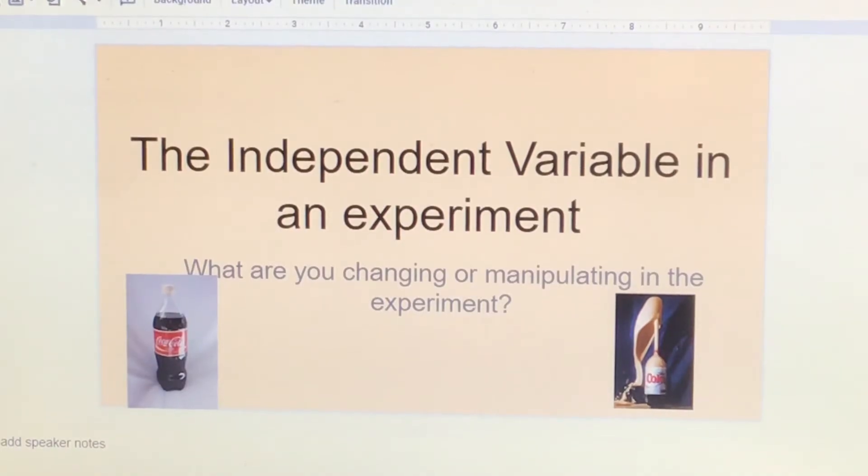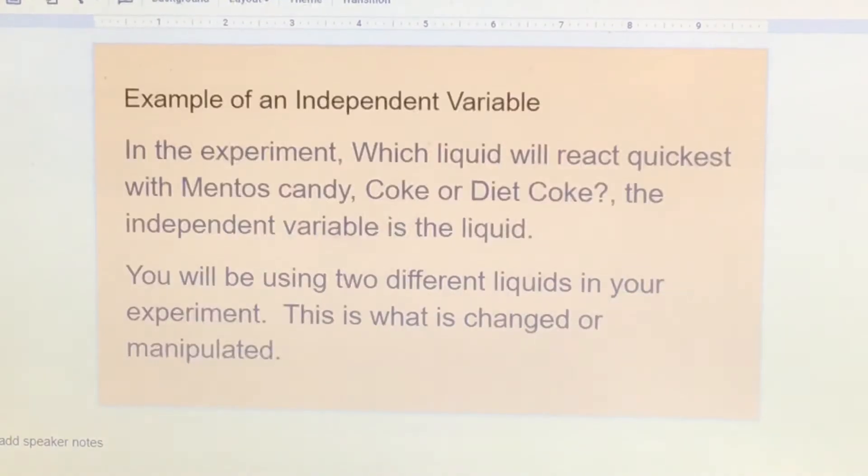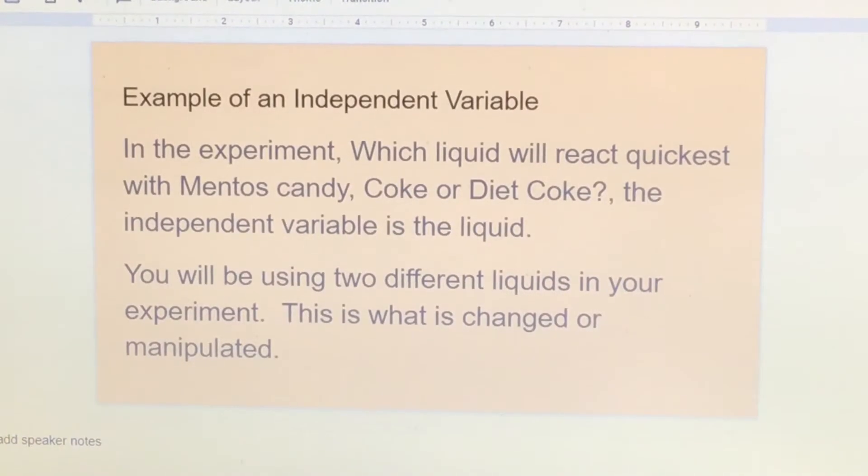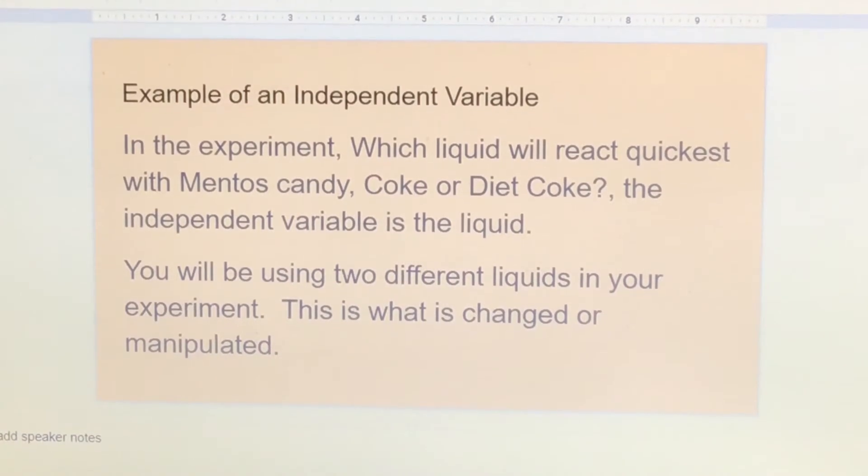The independent variable in an experiment is what you're changing or manipulating in the experiment. An example of an independent variable is in the experiment, which liquid will react the quickest with Mentos candy, Coke or Diet Coke? The independent variable is the liquid because that's what you're changing. You'll be using two different liquids in your experiment. This is what has changed or been manipulated.